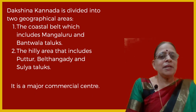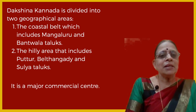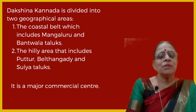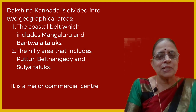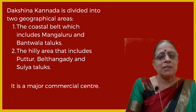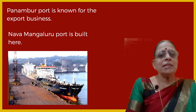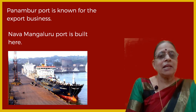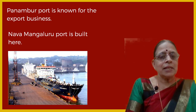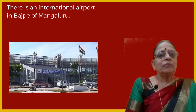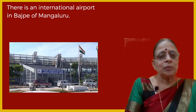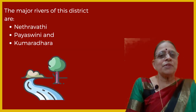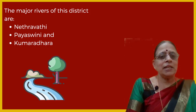Dakshinakannada is divided into two geographical areas: the coastal belt, which includes Mangaluru and Bantwala taluks with the ocean belt, and the hilly area that includes Puttur, Belthangadi and Sulya taluks. It is a major commercial center with large trade activities. Panambur port is known for export business, and New Mangaluru port is built here to promote export and import. There is also an international airport at Bajpe, Mangaluru. The major rivers are Netravathi, Payaswini and Kumaradhara.